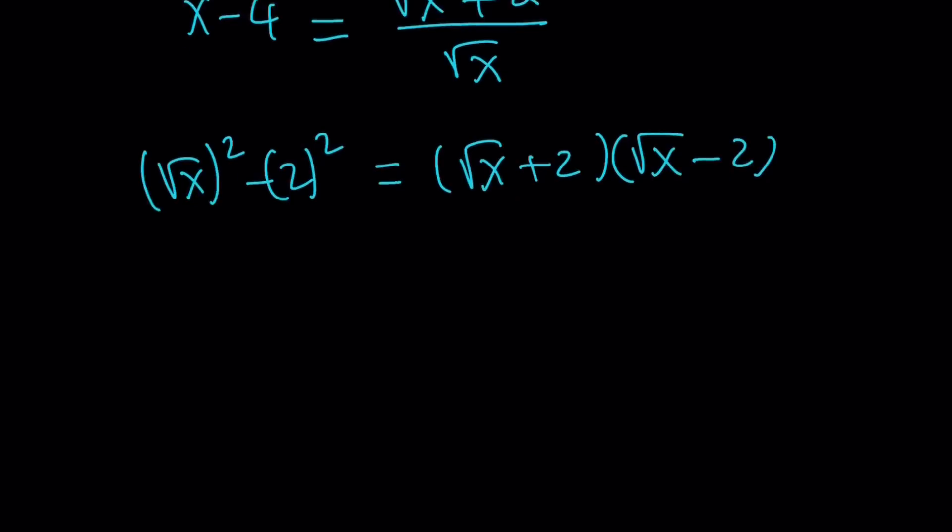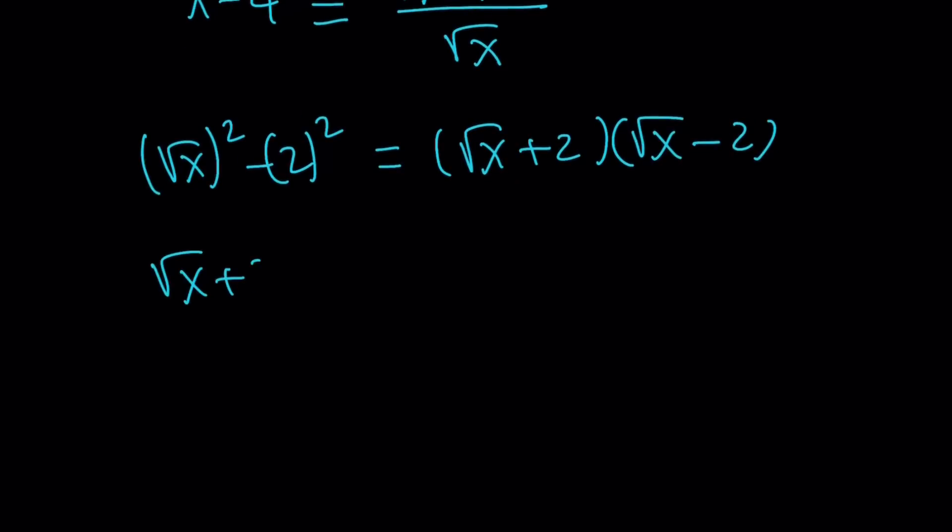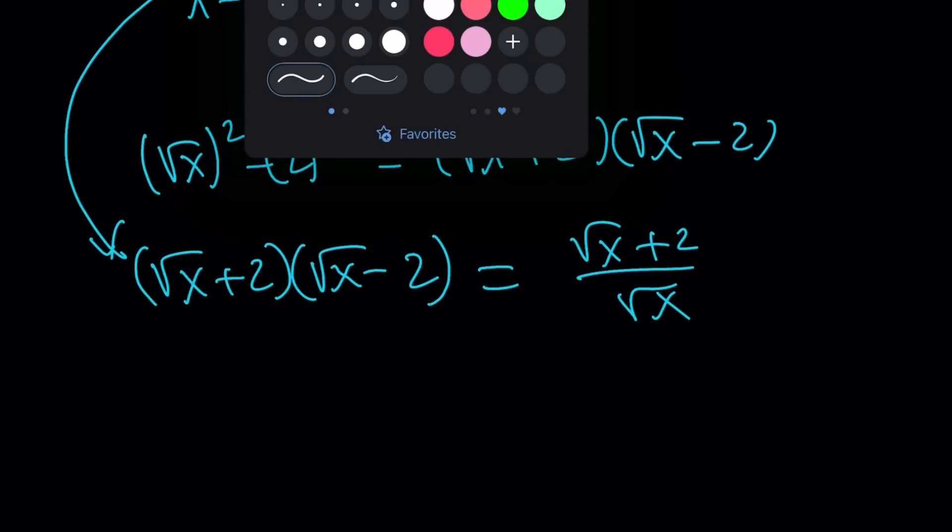Awesome. And that's going to be helpful. Square root of x plus 2 multiplied by square root of x minus 2 following up from here. And that is equal to square root of x plus 2 divided by square root of x. Now, can we cancel out the square root of x plus 2 from both sides? Yes, if it's not equal to 0. What if it's equal to 0? Well, it can never equal 0.